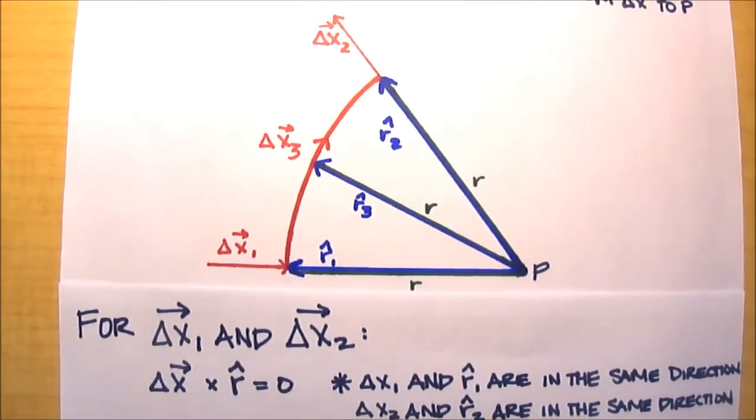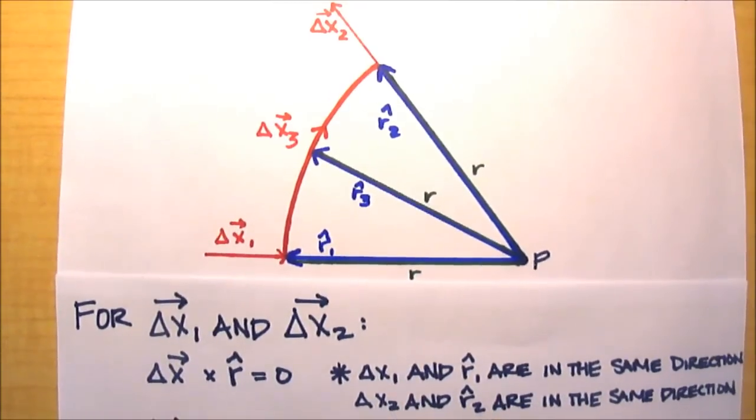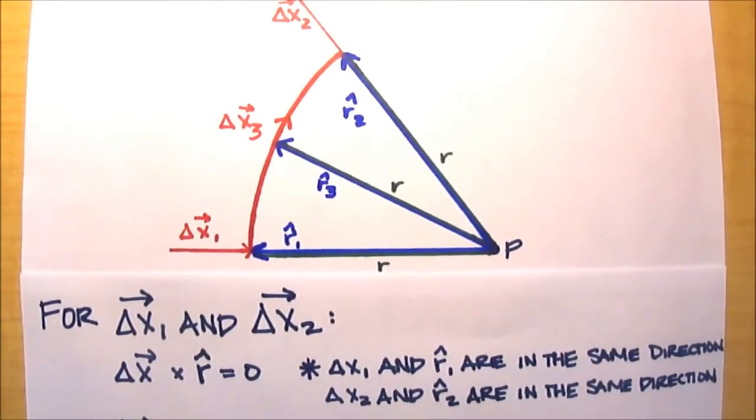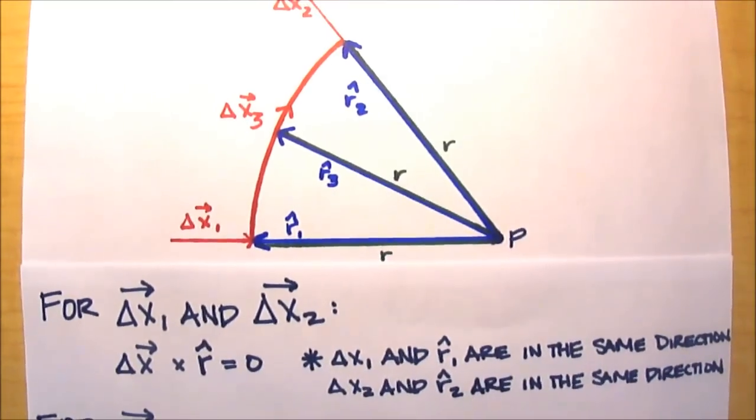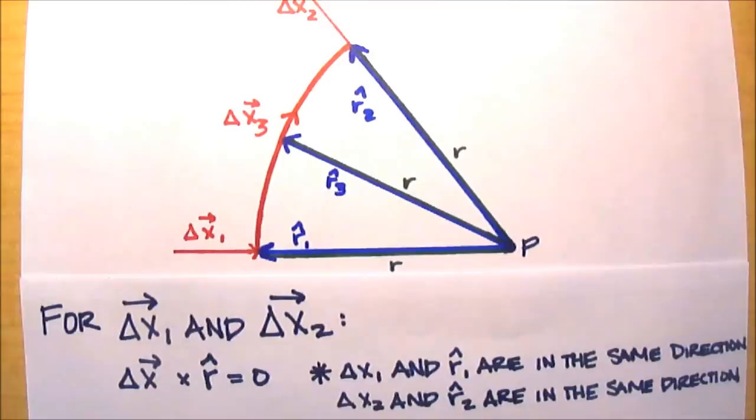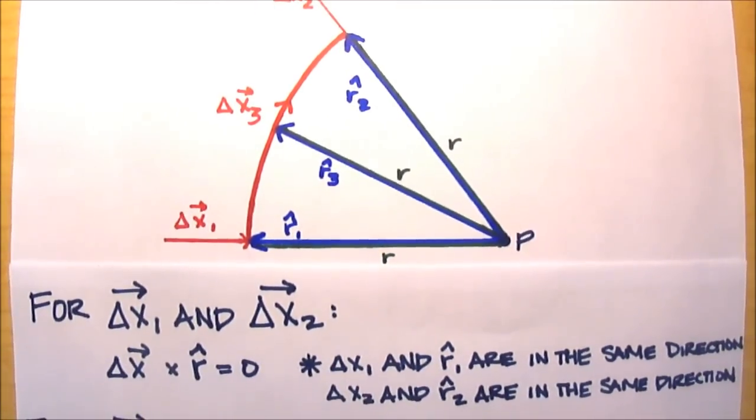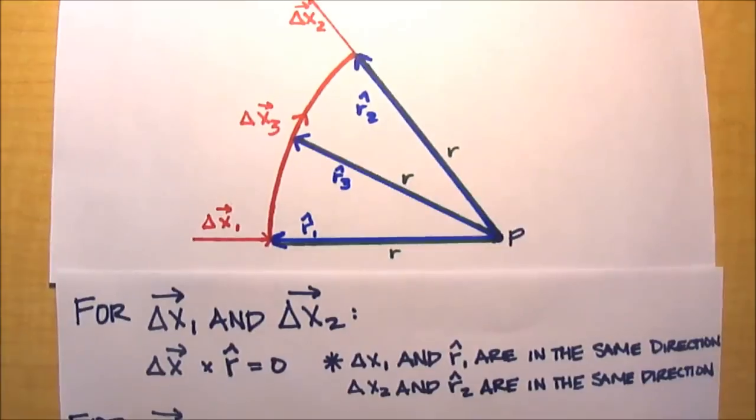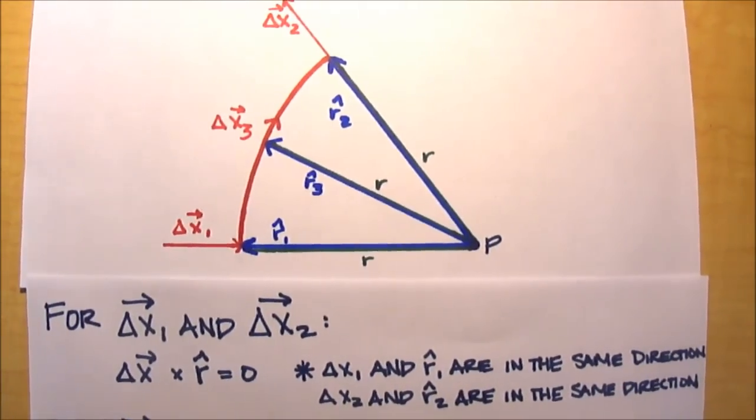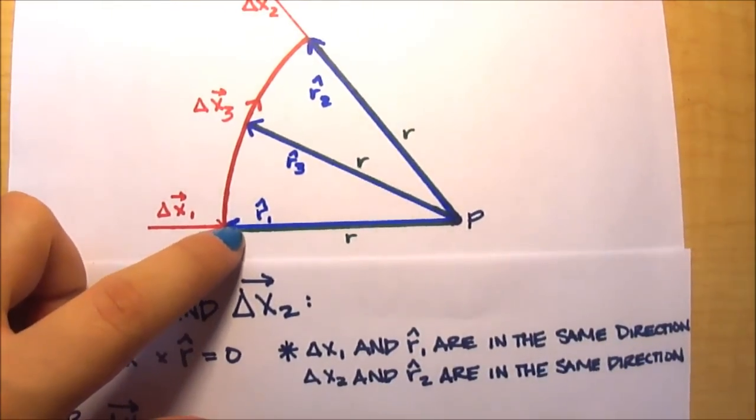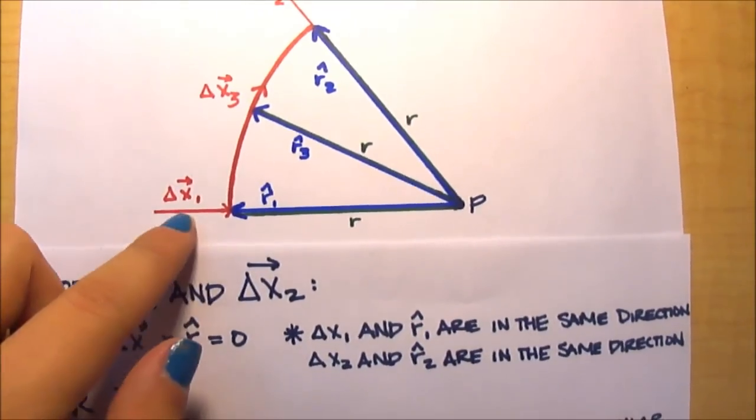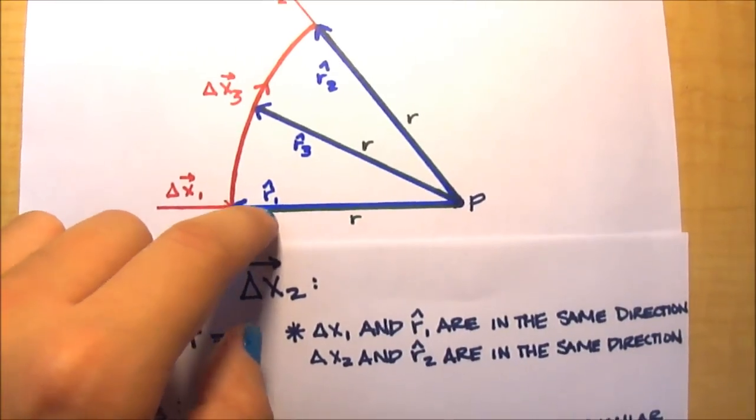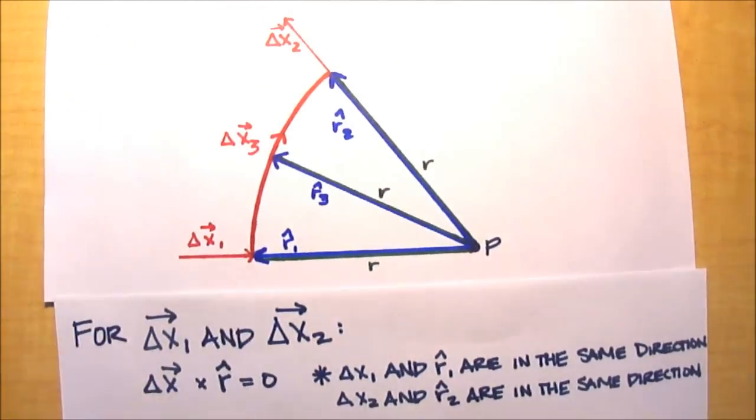Now it turns out in this problem, the cross products for the current segments 1 and 2 are actually just zero, because the current segment, as well as the vector, the r̂ vectors, are in the same direction. In other words, the cross product is actually zero, because the angle between Δx and its respective r̂ is zero. So in this case, as you can see here, Δx₁ and r̂₁, the angle between them is just zero. Likewise, up here, Δx₂ and r̂₂, the angle is zero.